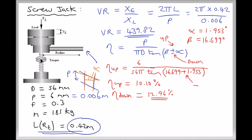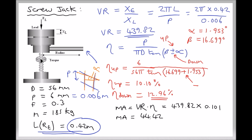The last thing to calculate is the force required to lift the load. With a relatively low efficiency of 10%, we need to work out the mechanical advantage. Mechanical advantage is simply velocity ratio times efficiency. We have a velocity ratio of 439.82 and efficiency of 0.101 as a decimal, giving a mechanical advantage equal to 44.42. Again there are no units attached — it's a ratio.